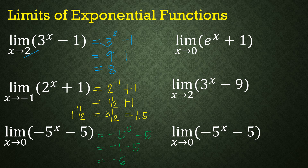Next, we have the limit of e^x + 1 as x approaches 0. Substituting x = 0: e^0 + 1. Since e^0 = 1, we get 1 + 1, which equals 2.